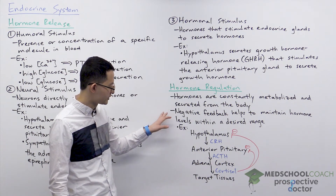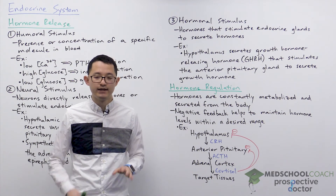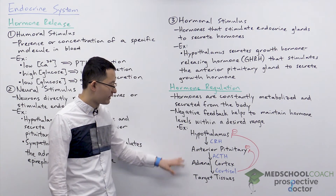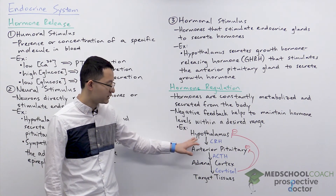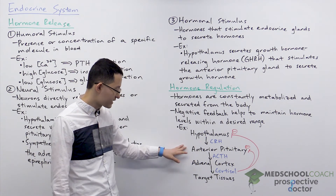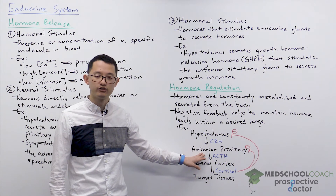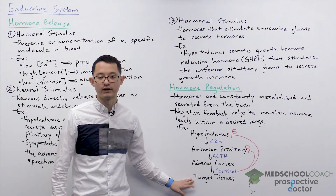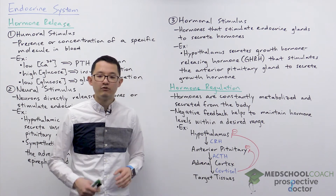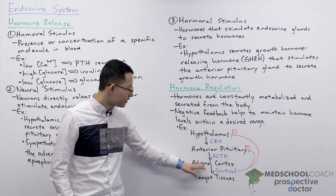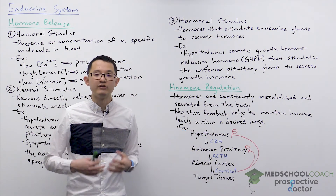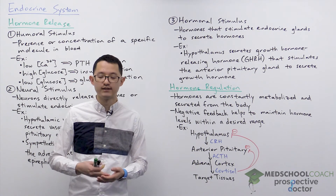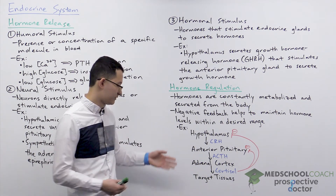One of the ways that hormone regulation is achieved is through negative feedback, which is a very helpful process to help maintain hormone levels within a desired range. For example, the hypothalamus releases CRH, which acts on the anterior pituitary gland to release ACTH, which then acts on its target tissues. Cortisol will act as a negative feedback regulator — it acts on both the hypothalamus and anterior pituitary gland to inhibit the secretion of CRH and ACTH. Essentially, negative feedback refers to how a product in the pathway inhibits upstream steps in the process.